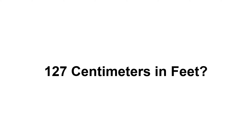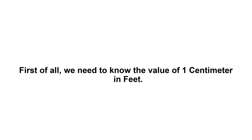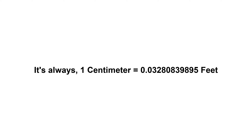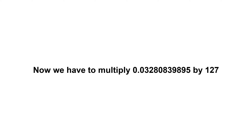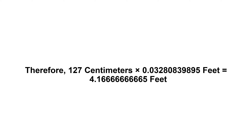127 centimeters in feet. First of all, we need to know the value of 1 centimeter in feet. It's always 1 centimeter equals 0.03280839895 feet. Now we have to multiply 0.03280839895 by 127. Therefore, 127 centimeters times 0.03280839895 feet equals...